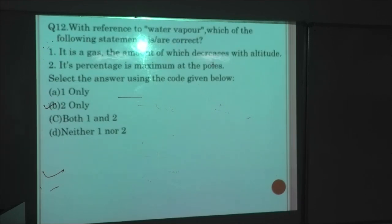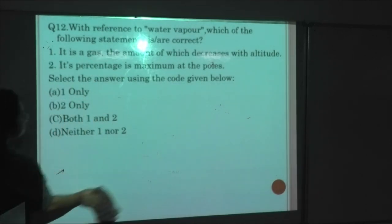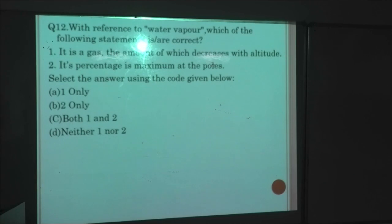Next: With reference to water vapor, which of the following statements is correct? Water vapor - it is a gas, yes it is a gas. The amount of which decreases with altitude - yes, it decreases with altitude. It is maximum at the poles - no, it is not maximum at the poles. According to which, first statement is correct. The higher the altitude you go, the amount decreases.